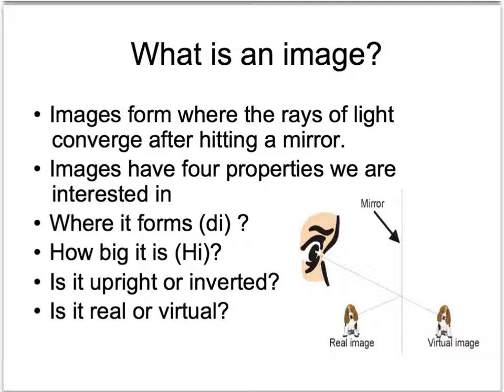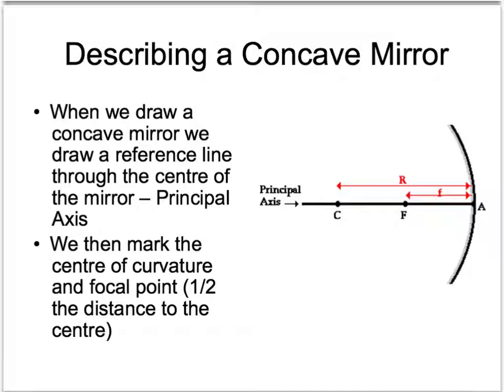Images form where the rays of light converge after hitting a mirror. Images have four properties we're interested in: where it forms (di, the distance of the image from the mirror), how big it is (hi), whether it's upright or inverted, and whether it's real or virtual. Up till now with plain mirrors we've only ever seen virtual images, but a real image is actually where the light goes. When we look at a mirror, we draw a line through the middle called the principal axis — that's our reference line — and then mark the center of curvature.